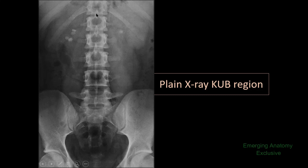Now, come to these structures — what is this? These are the tips of the spinous processes. But remember that this tip of the spinous process belongs to this vertebra. And this tip of the spinous process belongs to this vertebra. This one is for this vertebra, and the other tips of the spinous processes similarly correspond to their vertebrae above.